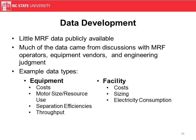The data we've developed was primarily based on discussions with MRF operators, equipment vendors, and when those were unavailable, we used our engineering judgment. The primary reason we don't have peer-reviewed literature and other more commonly available data was due to availability. The data types we needed included equipment data — often covering costs, motor size, separation efficiencies, and maximum throughput or capacity — as well as facility data, incorporating costs, building size, and electricity consumption associated with offices, lighting, and other non-equipment needs.